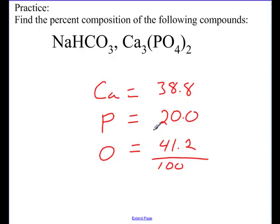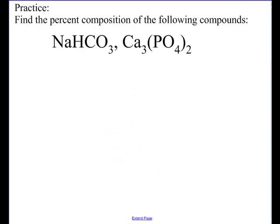Here are the percents that I got, 38.8, 20, 41.2, and I am going to go ahead and show you how to do this, just in case you didn't get those numbers. So, I'm going to go with, the first thing I'm going to do is find the molar mass of calcium phosphate. I added up the weights of 3 calciums, 2 times 4, which would be 8 oxygens, and then 2 times 1, 2 phosphorous. When I do that, I get a molar mass of 310.18.